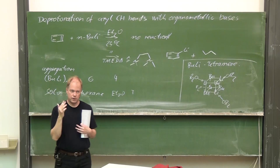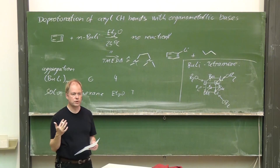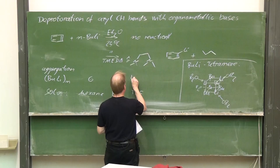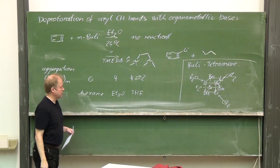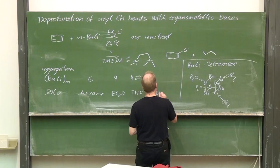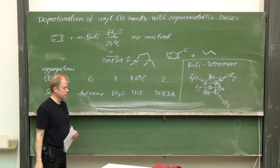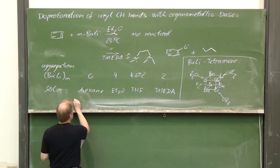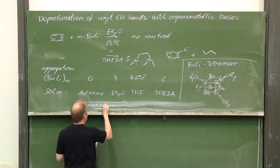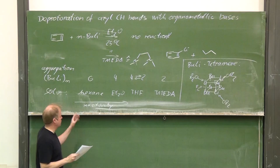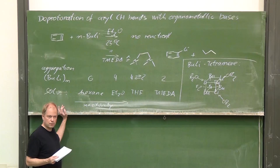What is the structure of the hexamer? There, the lithium atoms sit at the corners of an octahedron — too complicated to draw. In THF, we have an equilibrium of the tetramer and the dimer, and with adding TMEDA we have exclusively the dimer.